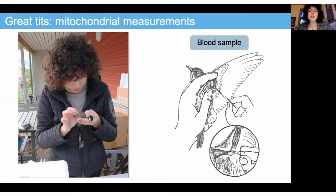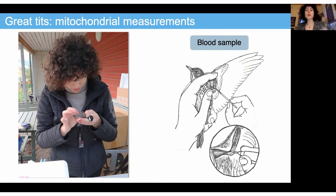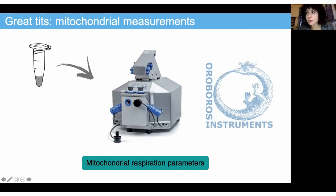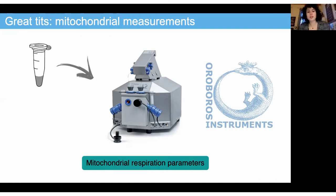For taking mitochondrial measurements and seeing how the cell produces energy, we can use blood samples because for birds, we have access to mitochondria in red blood cells. You open the wing and take a blood sample from the vein. Then you use this fresh blood in a machine called the Ouroboros machine. You centrifuge the blood to split the plasma and the red blood cells, then put the red blood cells in two hermetic chambers with specific chemical components, and calculate the efficiency of the cell to produce energy.